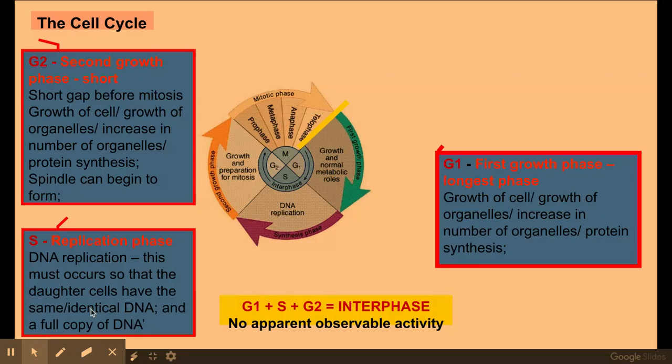But the main thing here that we need to know about as to why this goes on is so that each of the daughter cells have the same or identical DNA and that they have a full copy of that DNA or a full set of chromosomes. So anything in a red box, don't forget, is taken directly from the mark schemes.